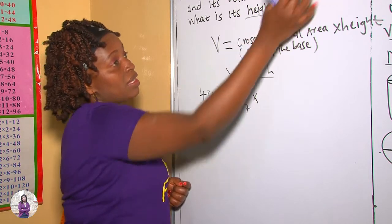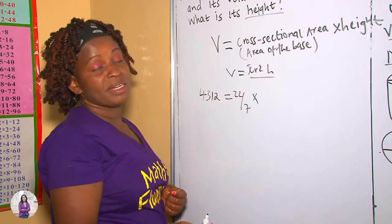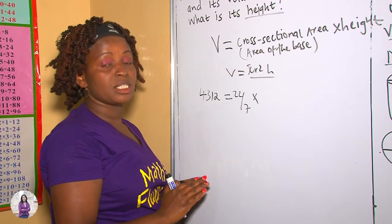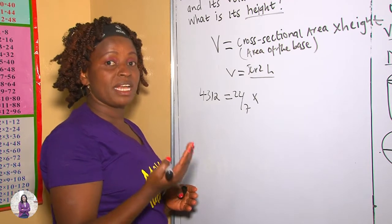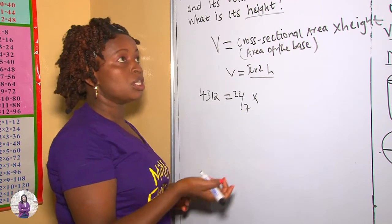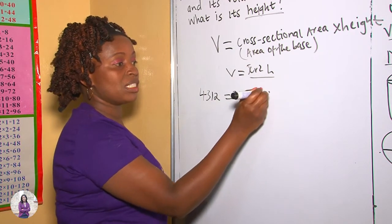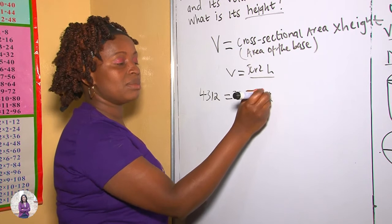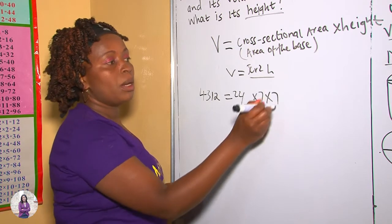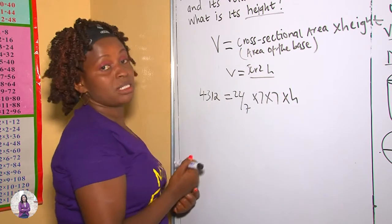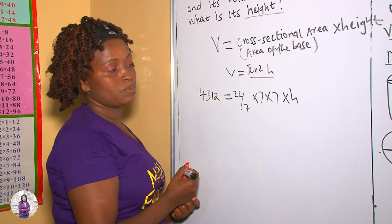4,312 is equal to 22 over 7 (our π) times r squared. Remember we are given the diameter. To change diameter into radius we divide the diameter by 2. So 14 divided by 2 is 7. So we have times 7 times 7, multiplied by h that we don't know, to give us this volume.